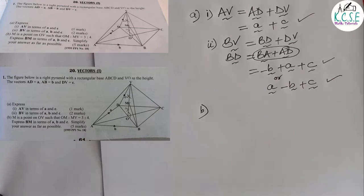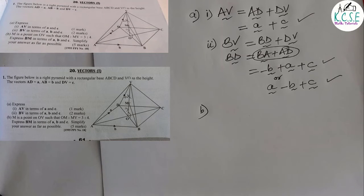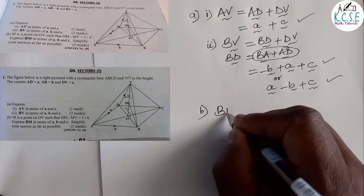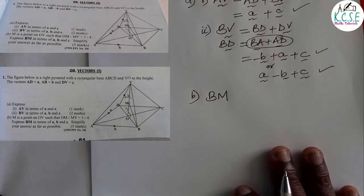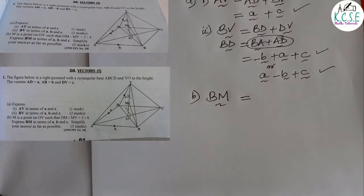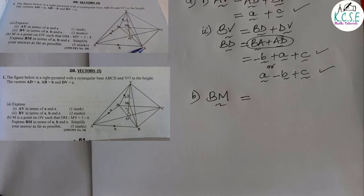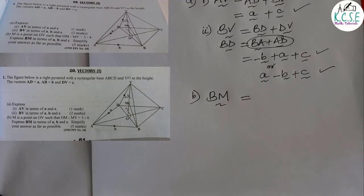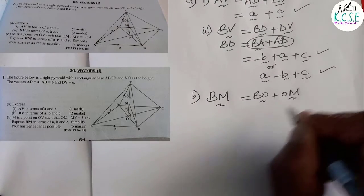Part B: M is a point on OV such that OM to MV is 3 to 4. Express BM in terms of a, b, and c. How do you move from B to M? The easier route is from B to O, then O to M. So BM = BO + OM.